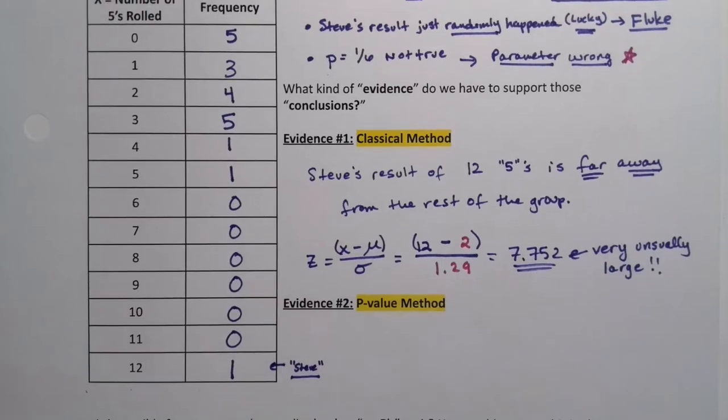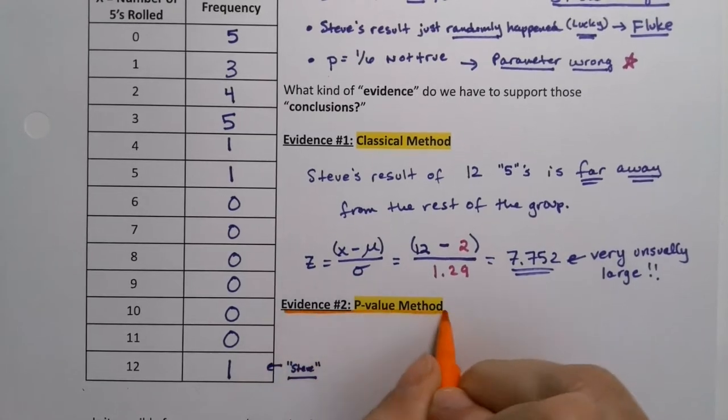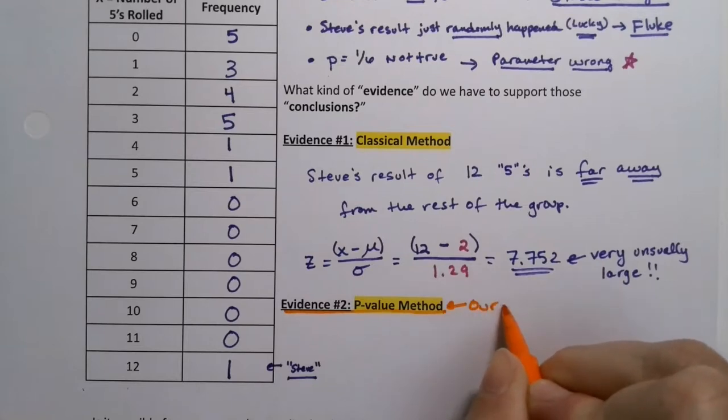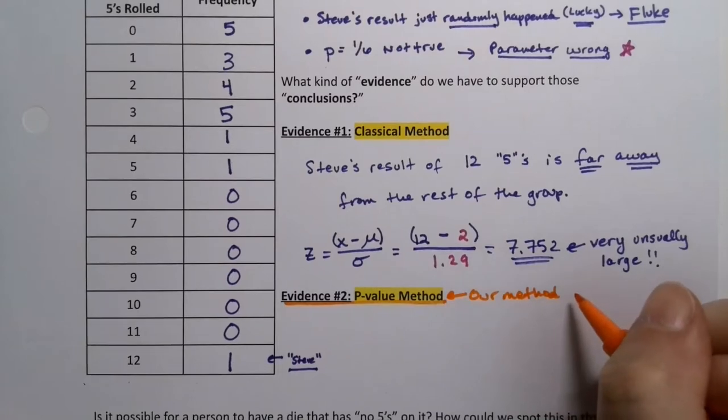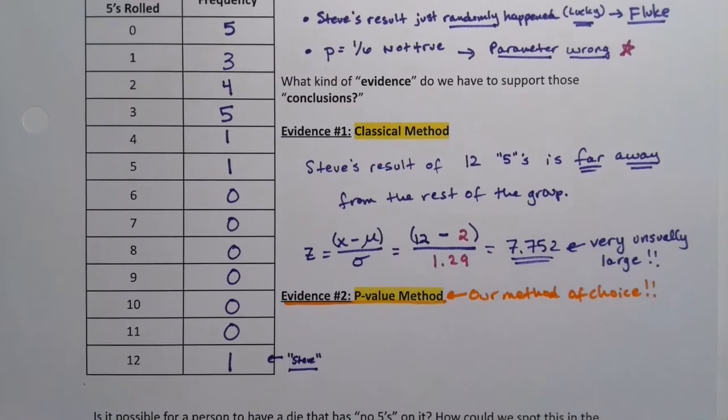The method we're going to use all the time is the p-value method. P stands for probability so this is the method that we are going to use. I want you to see the classical method because you may hear it in another class, but we're going to use the p-value method which is the more modern method.